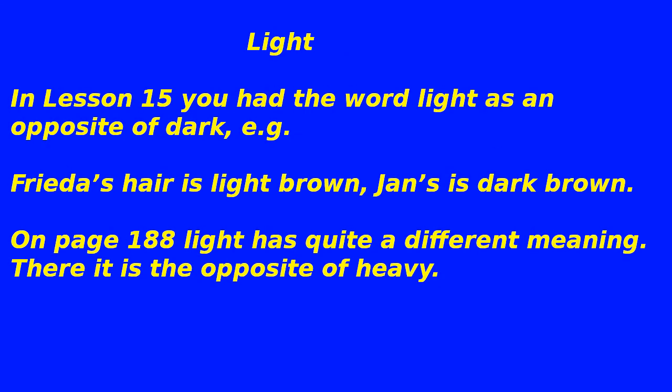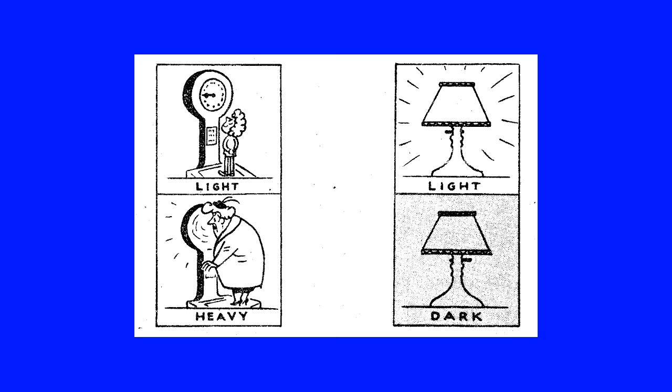Light: in lesson 15 you had the word 'light' as the opposite of 'dark.' For example: Frieda's hair is light brown, Jan's is dark brown. On page 188, 'light' has quite a different meaning — there it is the opposite of 'heavy.' So: light/heavy, light/dark.